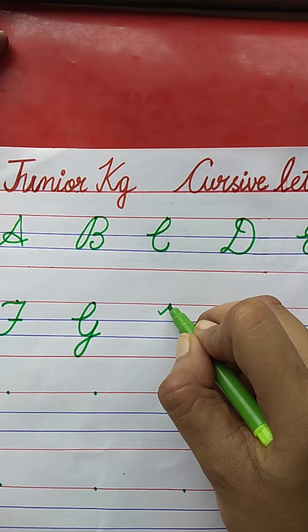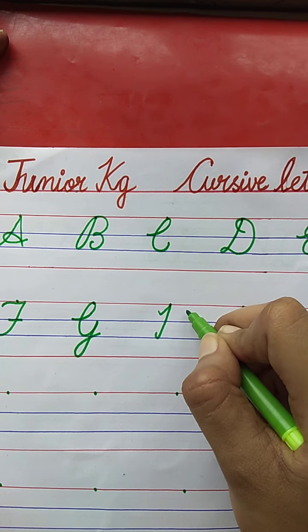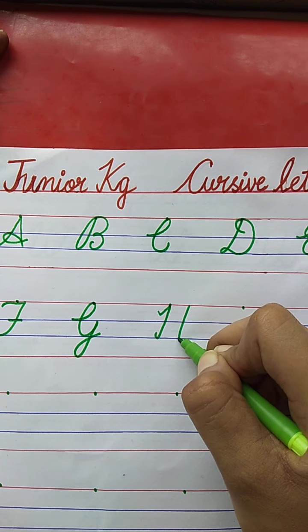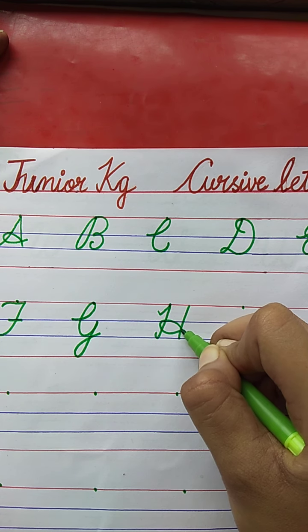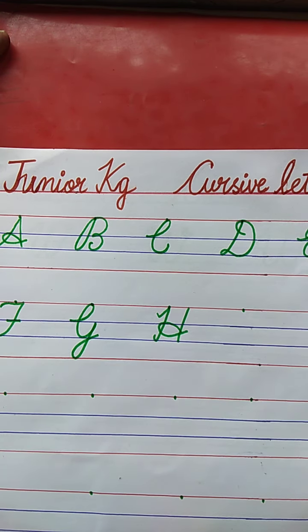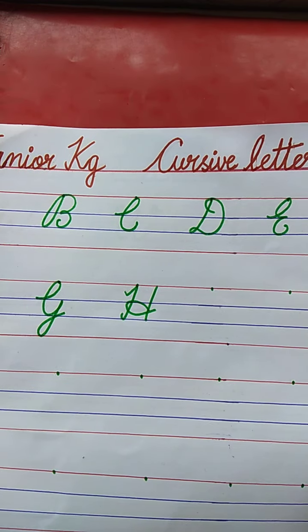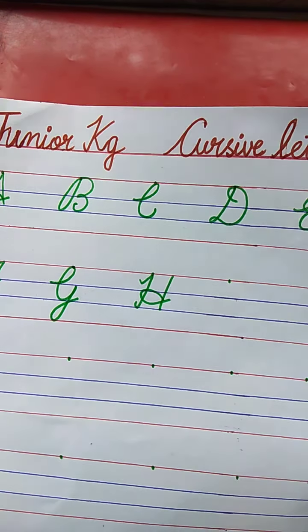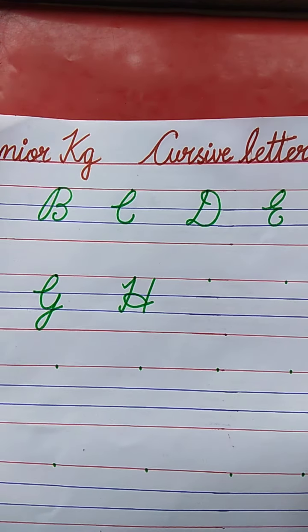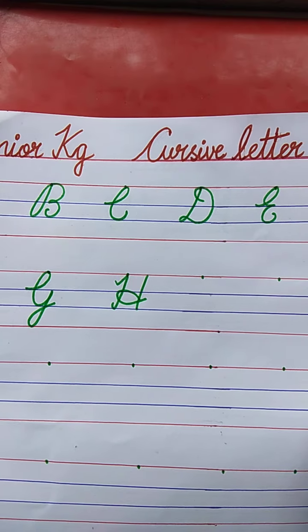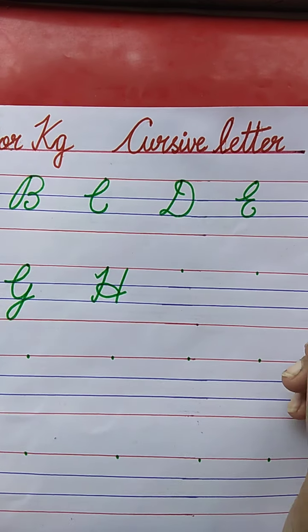H. Very good. Slanting line, one more slanting line, and a loop between these two lines. H for House. The spelling of House: H-O-U-S-E.